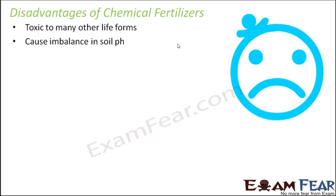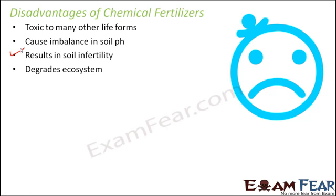Chemical fertilizers also cause imbalance in soil pH. The soil has a particular pH, and when excess chemical fertilizers are used, the pH of the soil gets disturbed — it becomes either too acidic or too basic. This results in soil infertility: instead of becoming more fertile, the soil tends to become infertile, which reduces productivity. It also degrades the ecosystem because excessive chemicals contribute to soil and water pollution, disturbing the entire ecosystem.